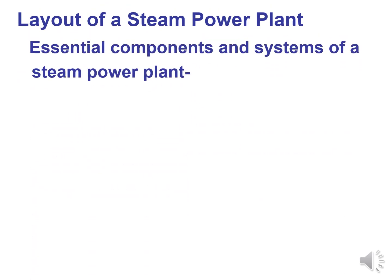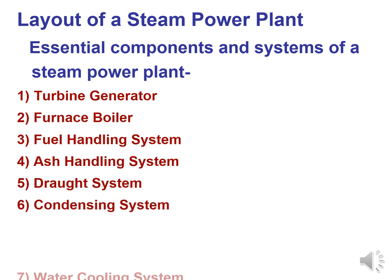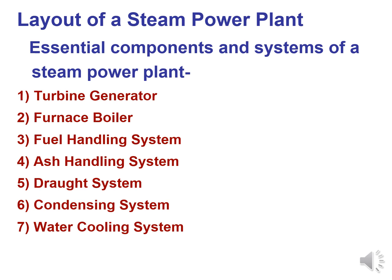We will now see the layout and important components of steam power plants. The important components are the turbine, generator, furnace, boiler, fuel handling system, ash handling system, draught system, condensing system, water cooling system, and lubrication system. These are the eight important components and systems of a steam power plant.